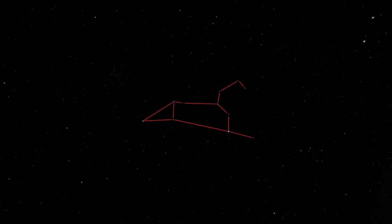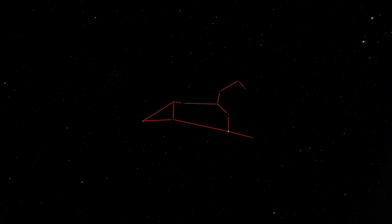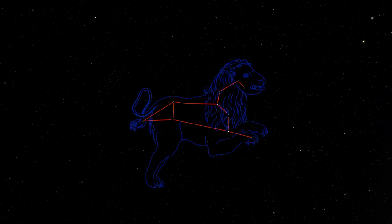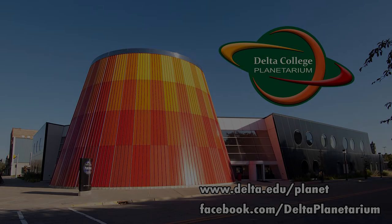So if it's clear where you are tonight, go out and find the Big Dipper and draw that line out to Regulus and Leo the Lion. Next time we'll continue to use the Big Dipper to fill out the spring constellations. This is Brian from the Delta College Planetarium, wishing you clear skies.